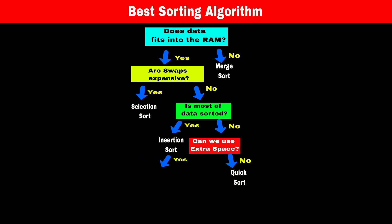But if we can use extra space, then we will check if we need a stable sorting algorithm or not. If you need a stable sorting algorithm, then we will select Merge Sort which has n log n time complexity and Big O n space complexity. But if we don't need a stable algorithm, then we will go with the quick sort.